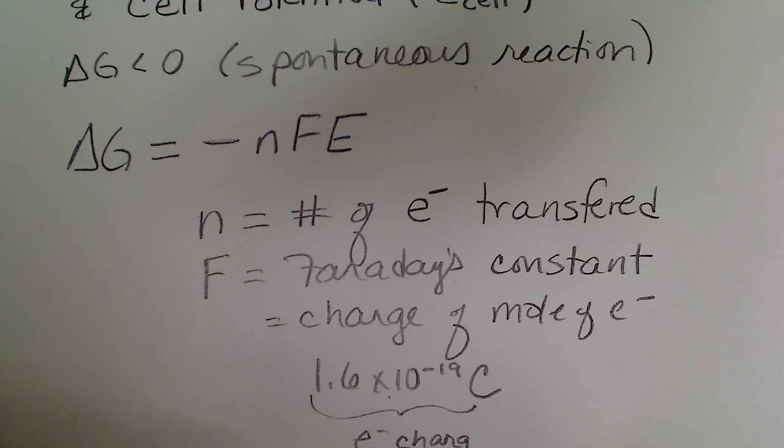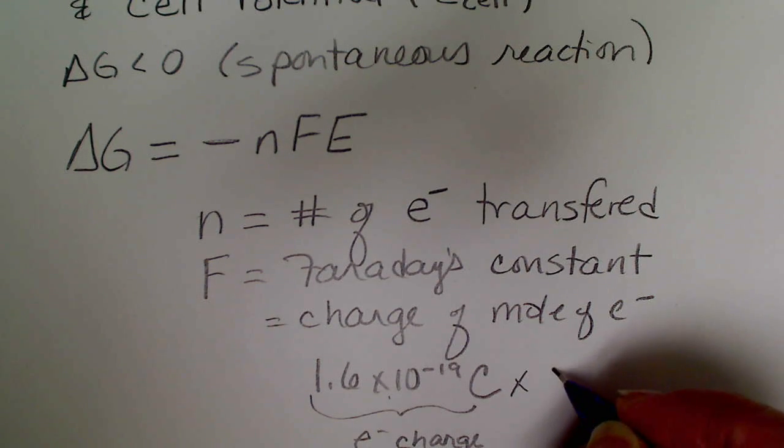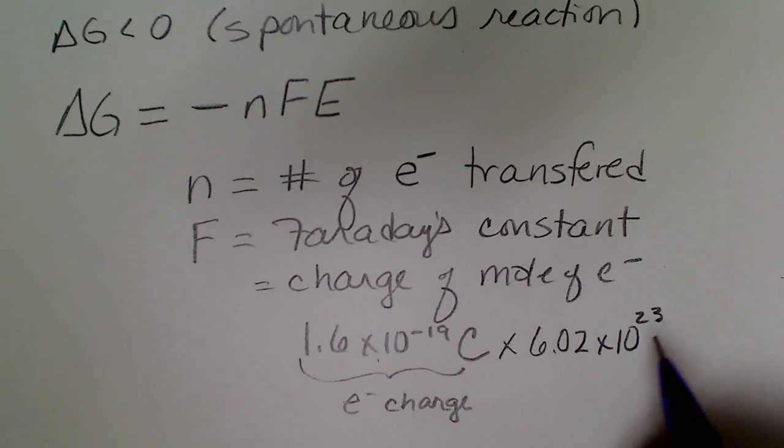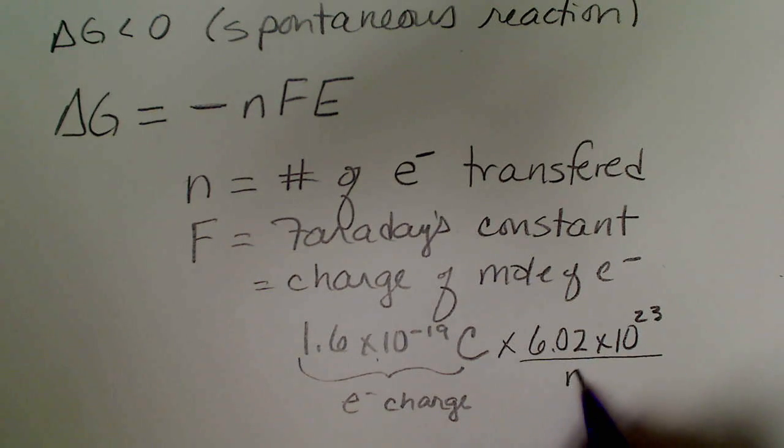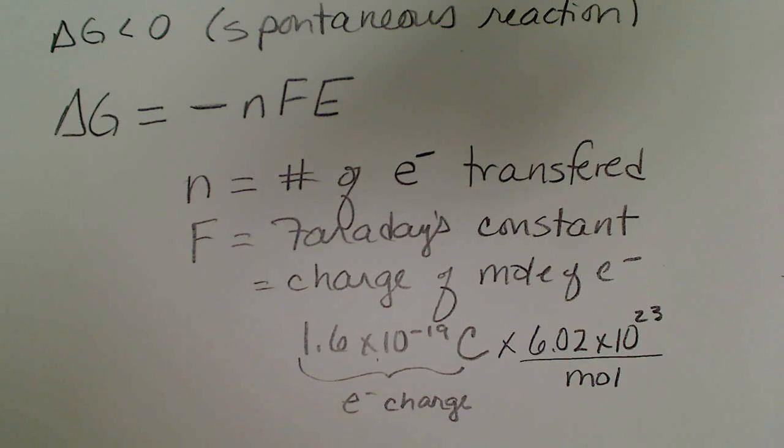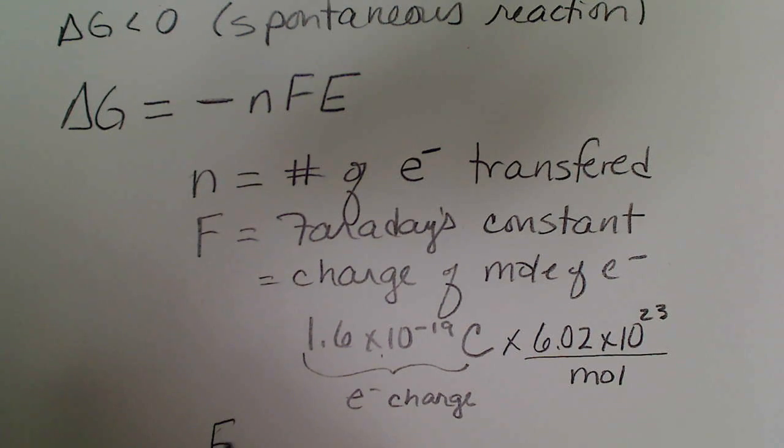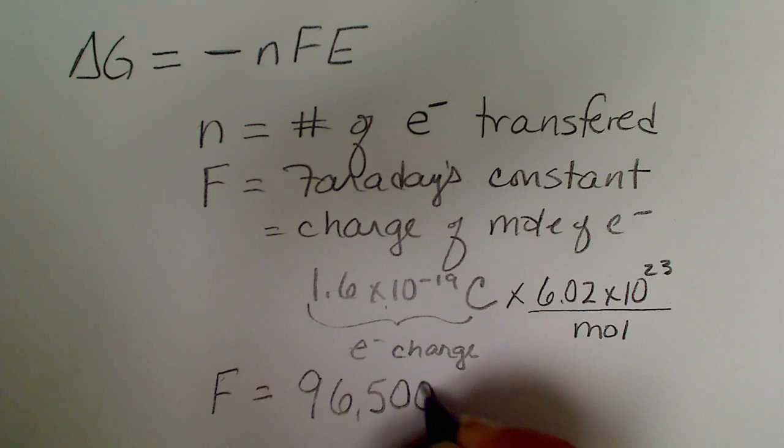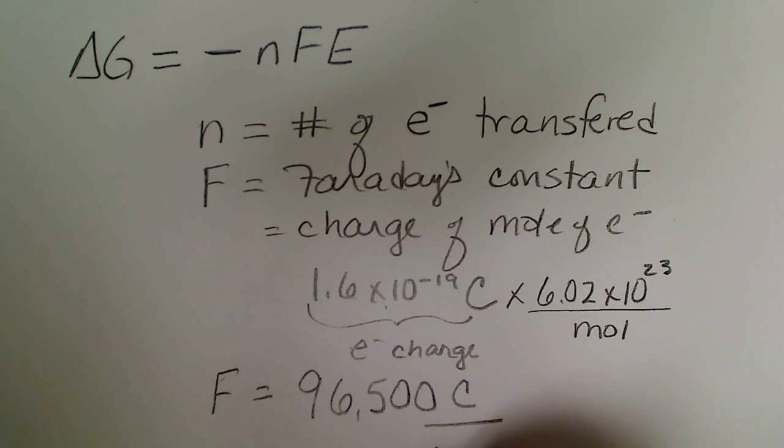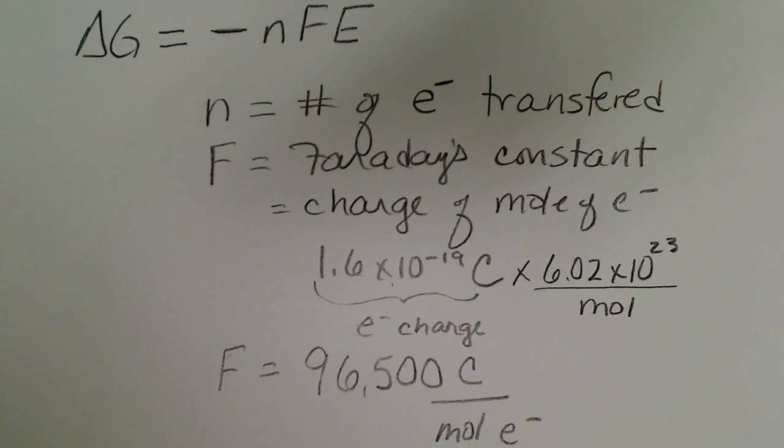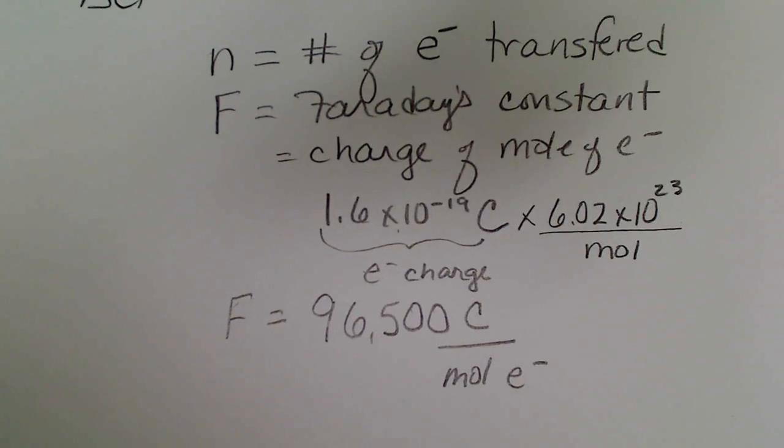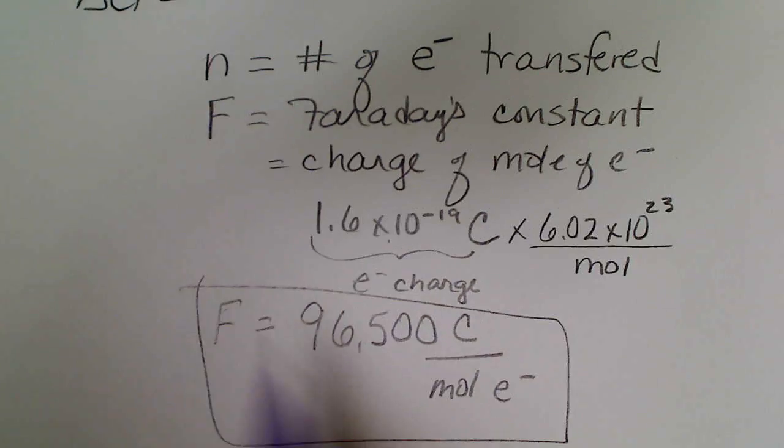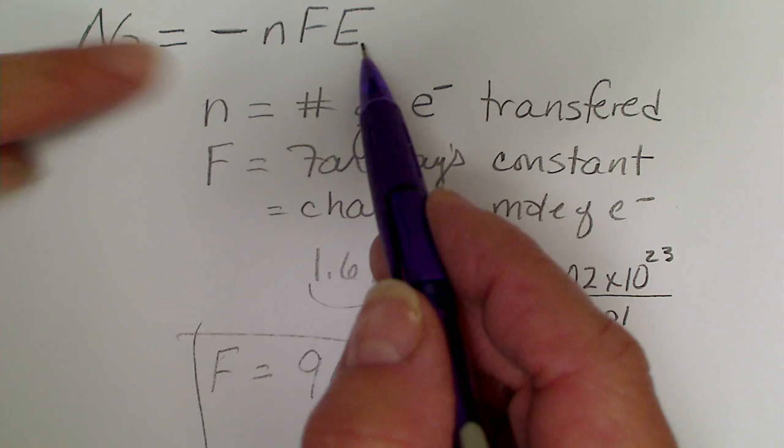If we want a mole of electrons, we're just going to multiply this value by one mole, 6.02 times 10 to the 23rd, that's that many items per mole. If we do that calculation, we're going to get Faraday's constant, and I'm just going to round that to 96,500 coulombs per mole of electrons. Michael Faraday did a lot of work with electricity.